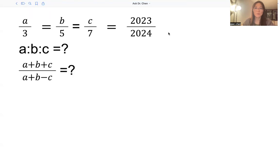We want to simplify this. This question has two parts. Given the ratio: A divided by 3 equals B divided by 5 equals C divided by 7 equals 2023 divided by 2024. It's too big a number to deal with.